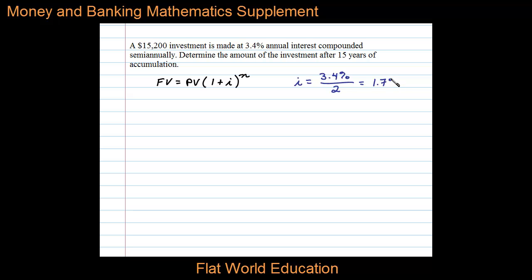Now to calculate the number of compoundings n, we'll take the number of years here, 15 years, and we'll multiply that times the number of compoundings per year, and that gives us 30 periods.